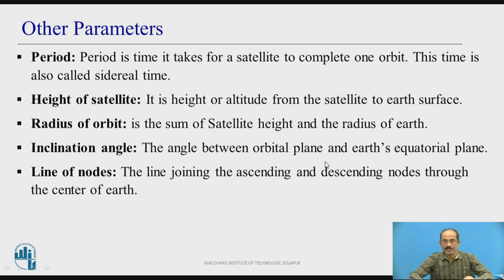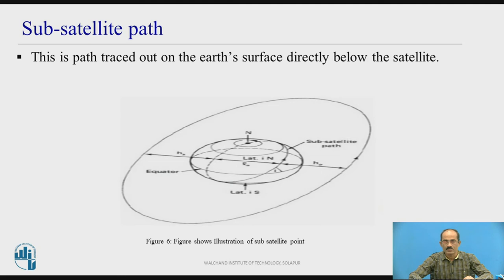Sub-satellite point is the path traced out on the earth's surface directly below the satellite. You can see in this diagram: the satellite is revolving in this path, and the trace it forms on the surface of the earth is called the sub-satellite path.